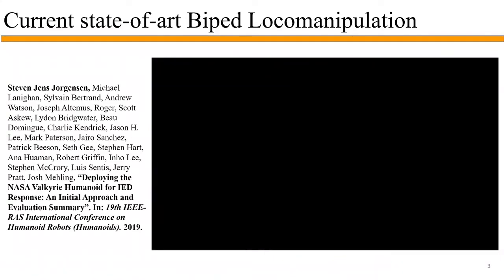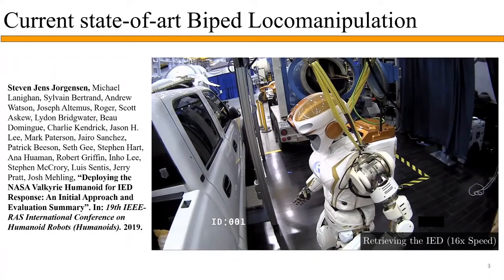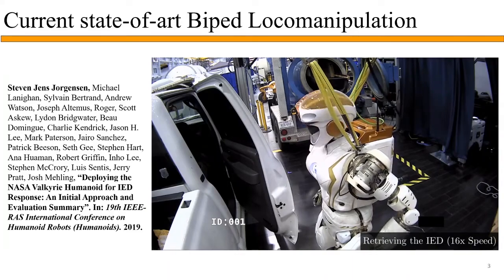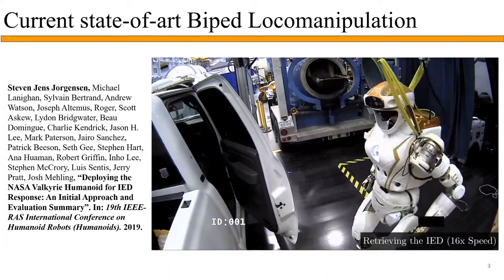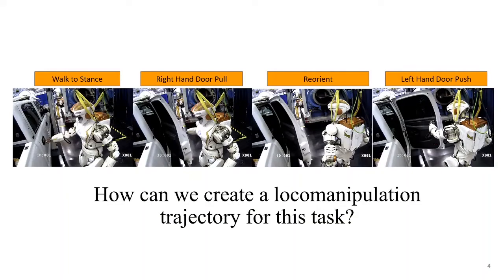If you notice, the robot is either locomoting around the door or manipulating the door, but it's never doing both at the same time. After significant engineering work with this task, at the fastest we can open the door in two minutes with this decoupled approach. So one of our motivations in this work is to speed up this door opening task by creating local manipulation trajectories.